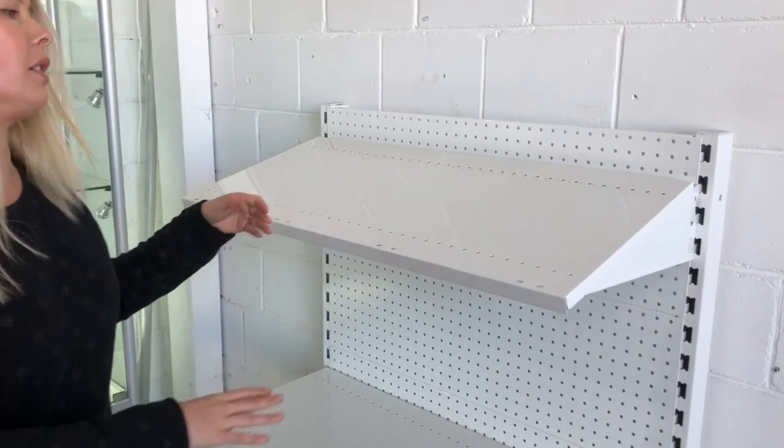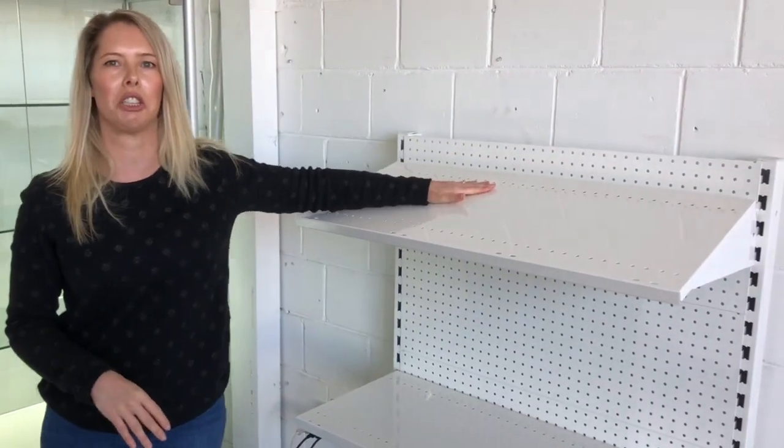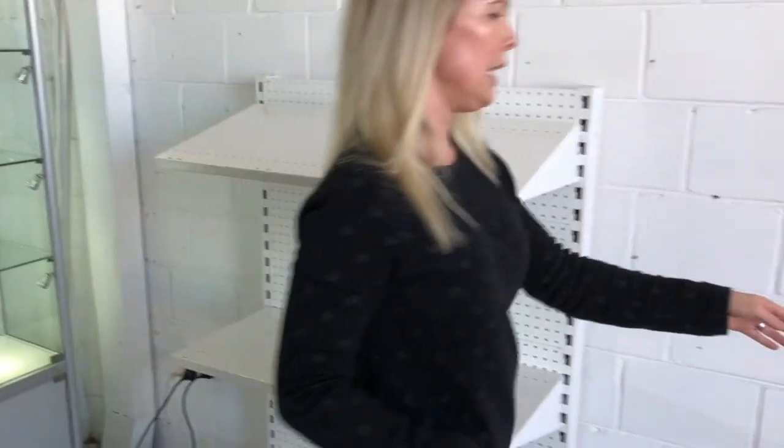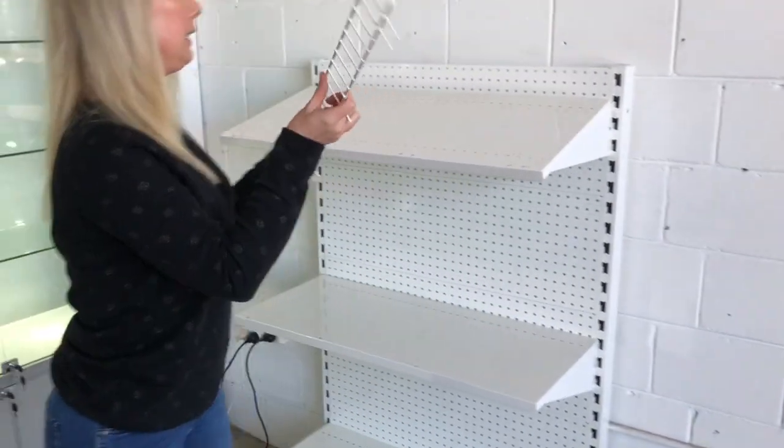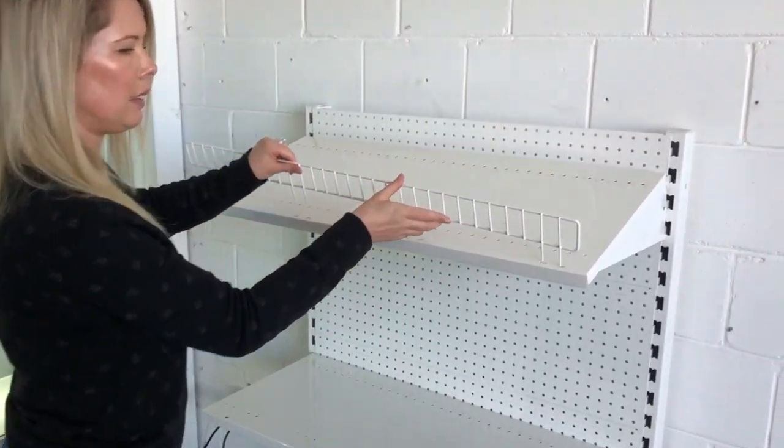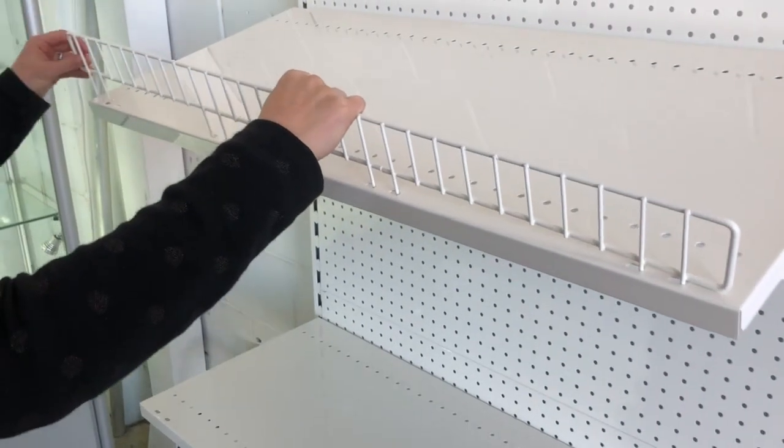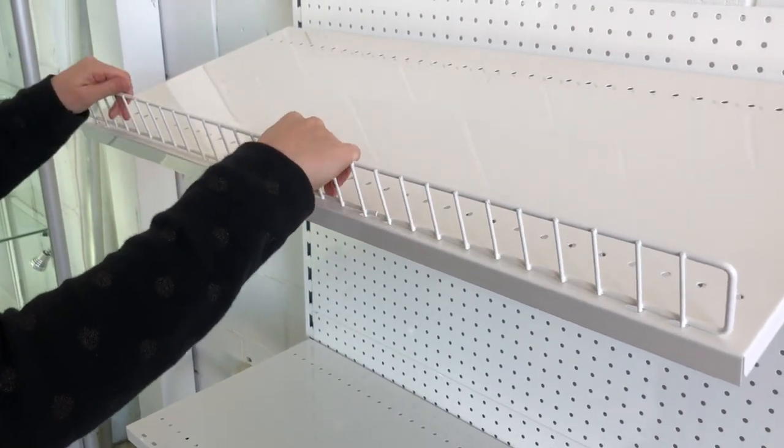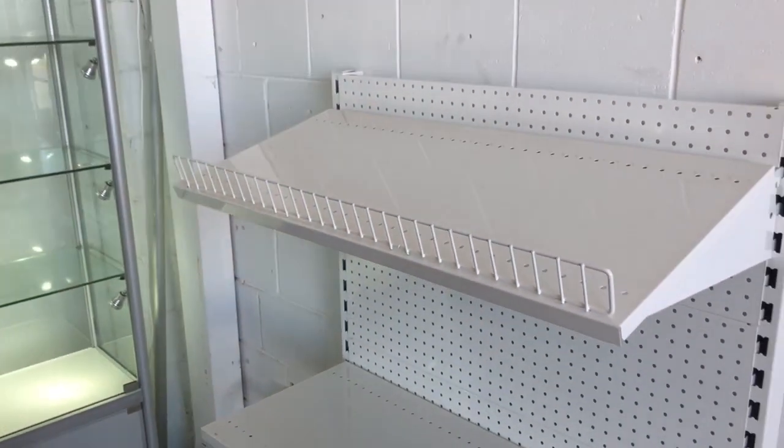Okay, for your angled shelves you'll find obviously if we put anything on like this it's just going to fall off. So we recommend our front gates, they just sit into the shelf. As easy as that.